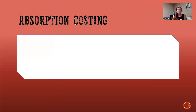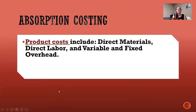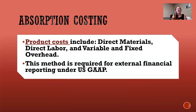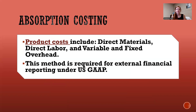Then we have absorption costing, where we include all of the direct materials, all of the direct labor, and all of the overhead — both variable and fixed. So our inventory includes all of that, which is what we've seen up until now. This is the method used under generally accepted accounting principles. In this chapter, we're going to look at variable costing and how it can have benefits to managers in making decisions.